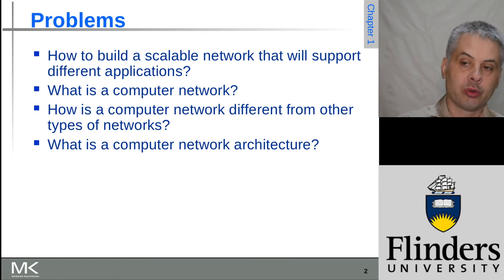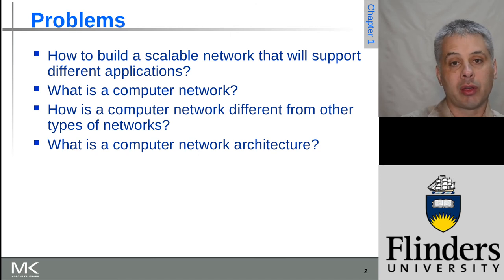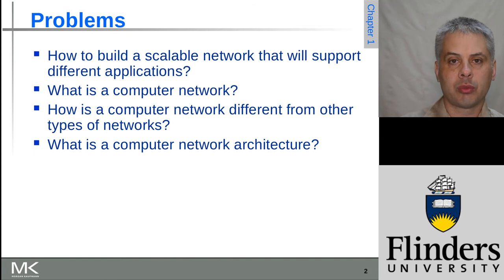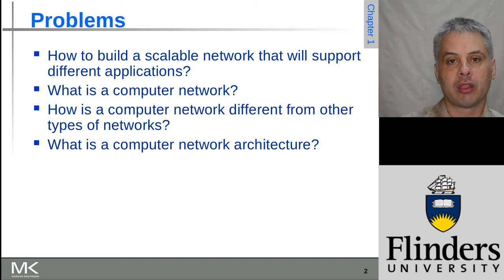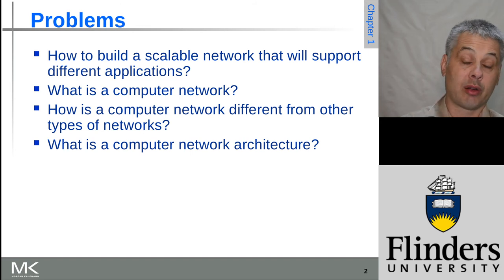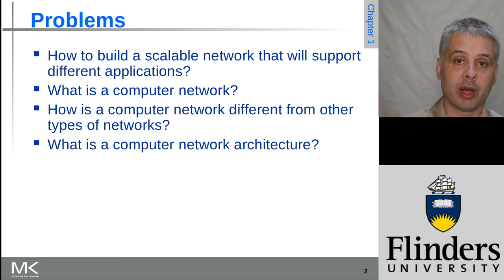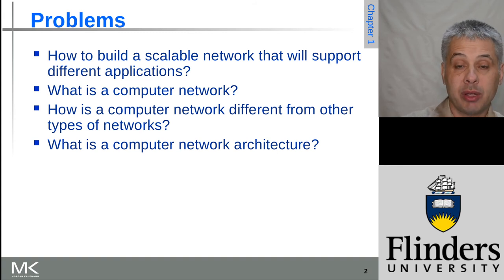We've already talked a little bit about computer networks being different from earlier networks that were much more specific in their purposes, and we'll cover that in more detail. We'll also talk about what a computer network architecture is — the grand design, the blueprints, of how a computer network is to function. Just like the architecture of a house or office building, there are many design choices that need to be made, and once made they have a very real impact on how the resulting artifact is used.